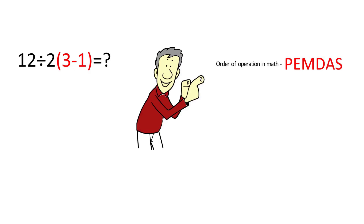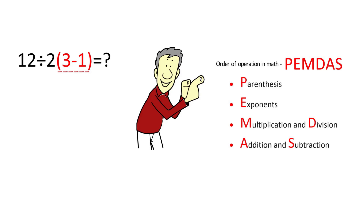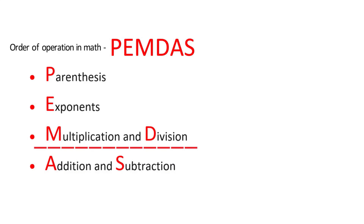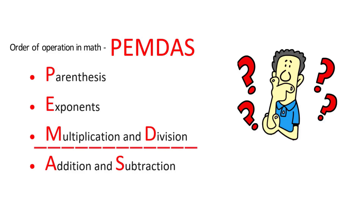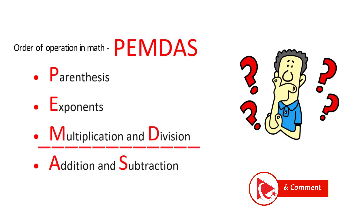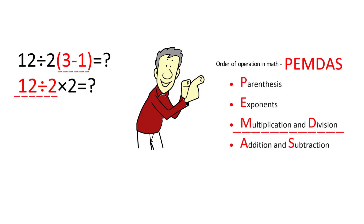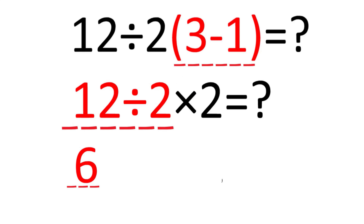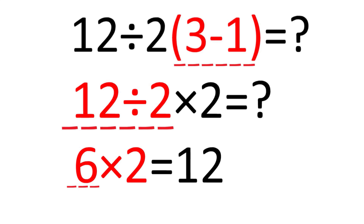The order of operations in math tells us that the first expression we need to solve is in parentheses. We first need to calculate 3 minus 1, and obviously the answer is 2. The order PEMDAS tells us that we need to do multiplication and division, but what it doesn't mention is that we need to do it from left to right. So we need to do division first and divide 12 by 2, then do multiplication. Once we divide 12 by 2, we get 6, and the final expression is 6 multiplied by 2. So the correct answer here is 12.